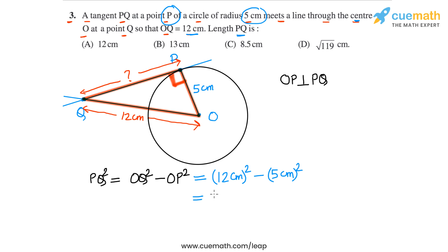So 12 square is 144, and then 5 square is 25. So 144 minus 25 is 119. So PQ we get as PQ square is 119 centimeters square.